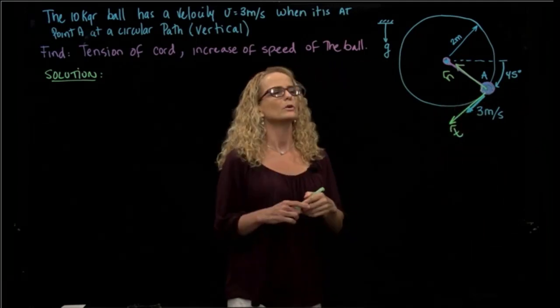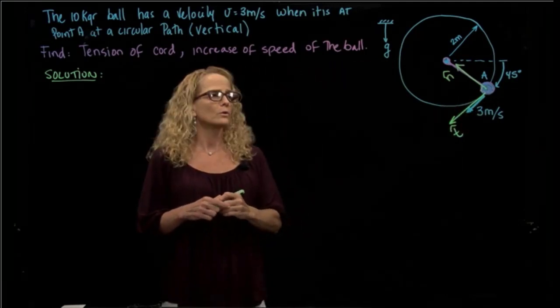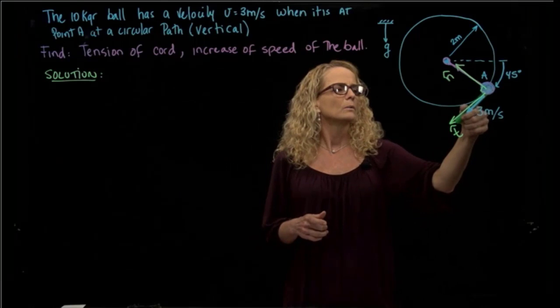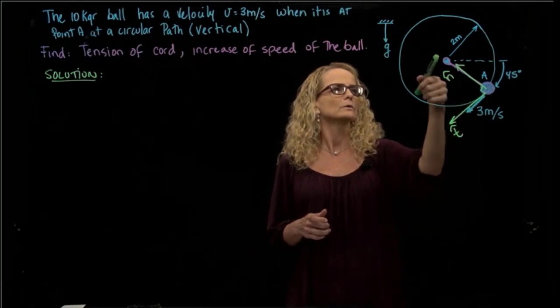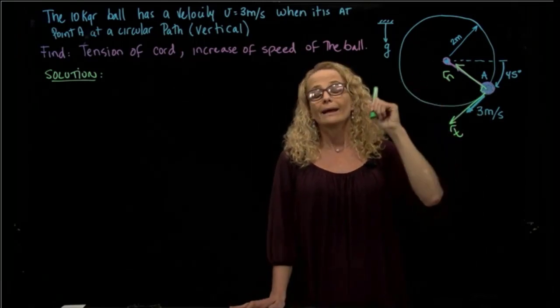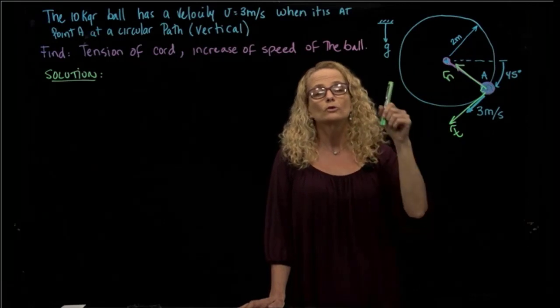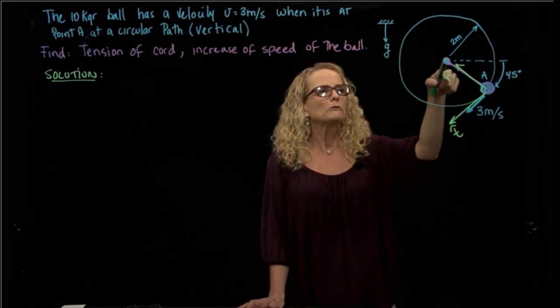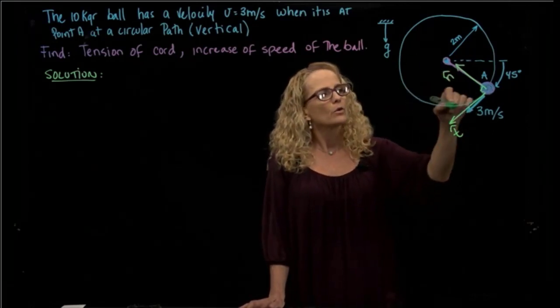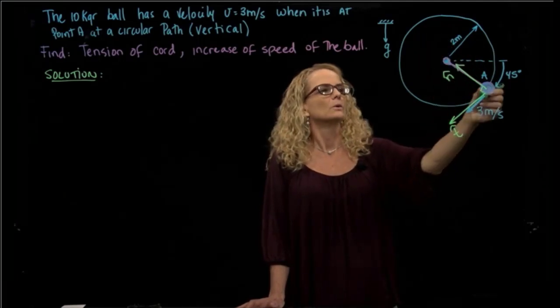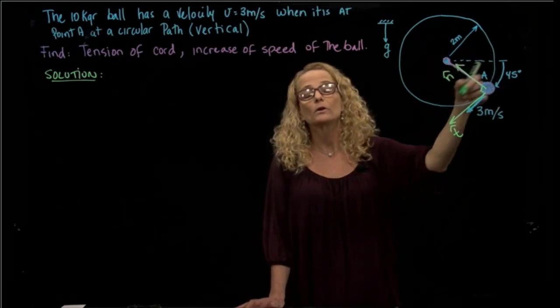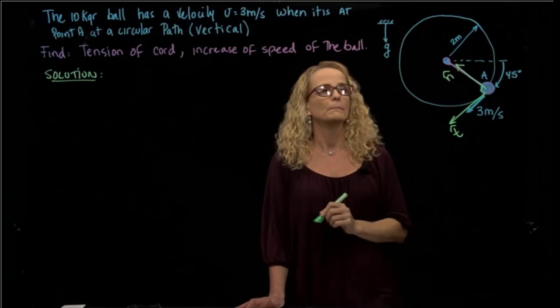So I have a coordinate system which is orthogonal, that means that it's perpendicular. One goes in the tangential direction and one goes normal. And the normal direction always points towards the center of that curve path. So that radius of curvature of my path is 2 meters.